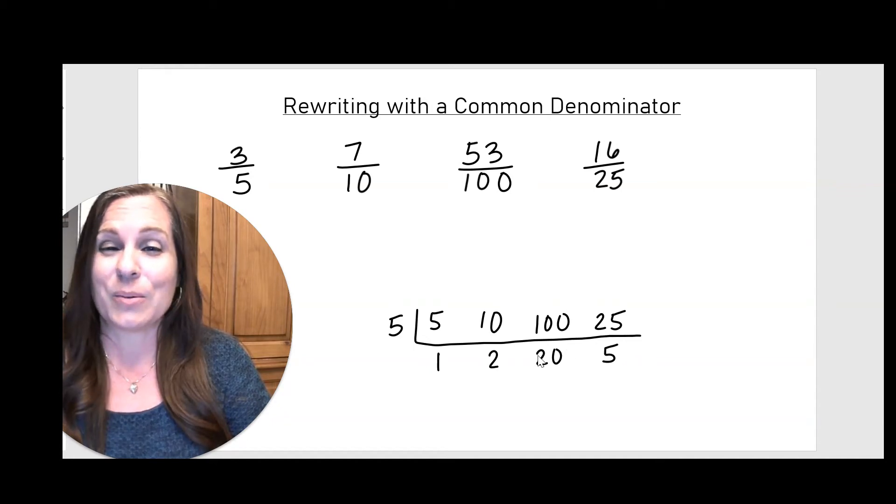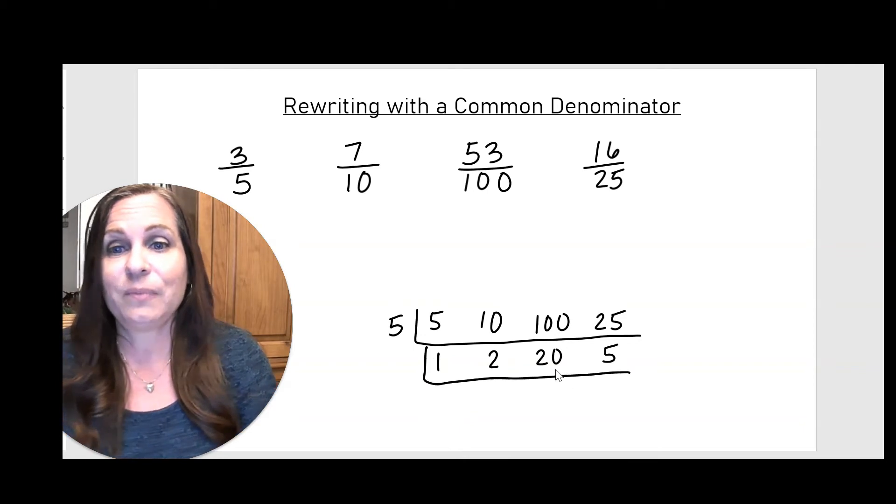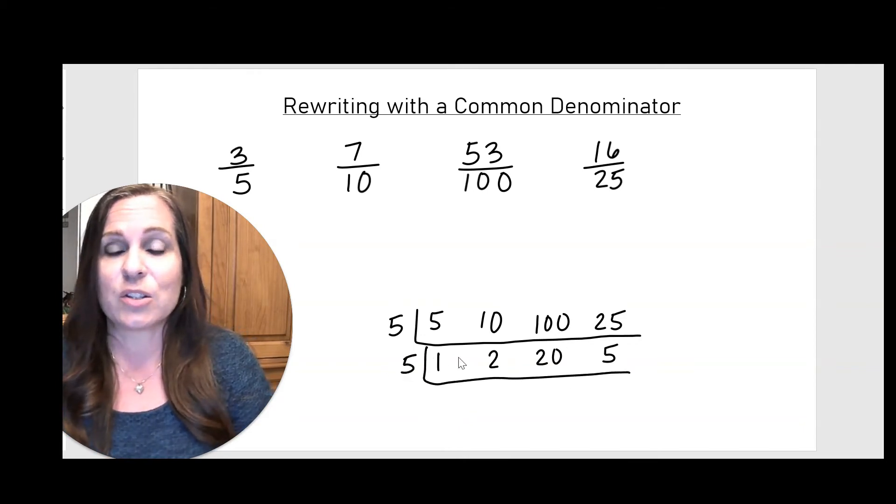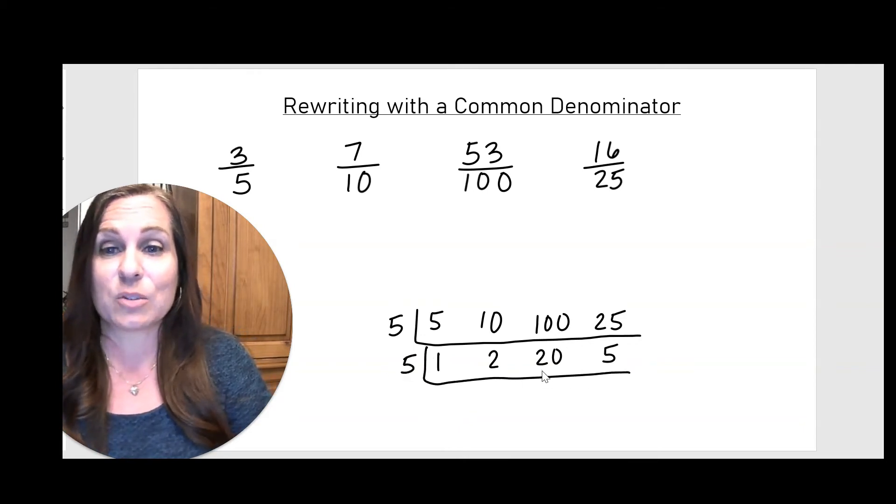Now there's no number that goes into all four of these, but 20 and 5 are both divisible by 5. So I'm going to divide just those two numbers by 5. 20 divided by 5 is 4, 5 divided by 5 is 1. And since I didn't divide the 5 into the 1 or the 2, I'm just going to bring those down.